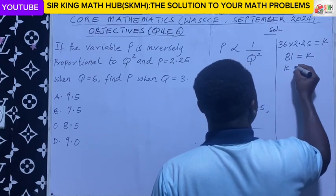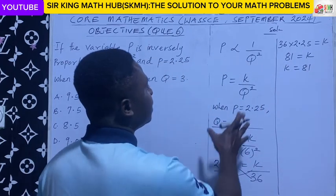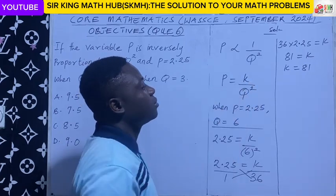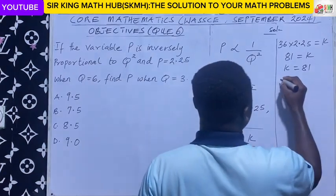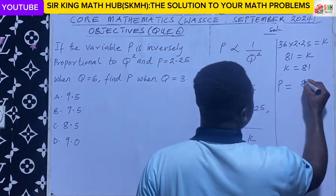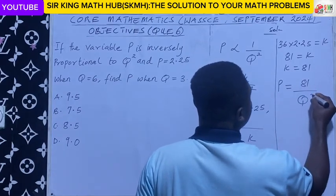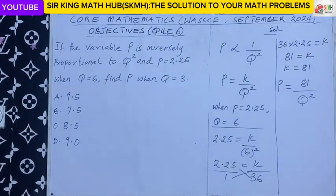So k is equal to 81. So we can now write the full equation that connects p and q. We have p is equal to - so k here is 81 on q squared. So this is the equation connecting p and q.